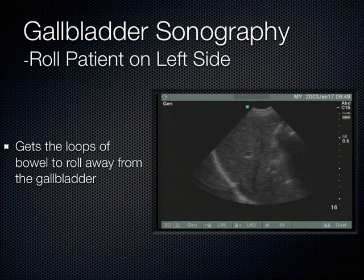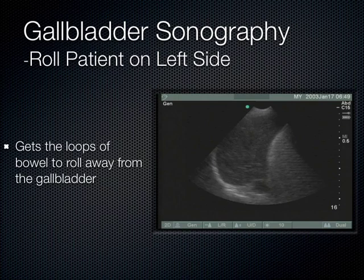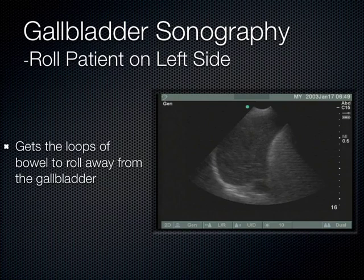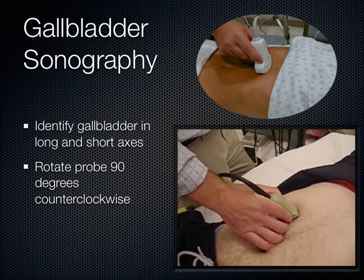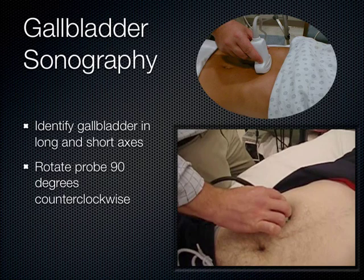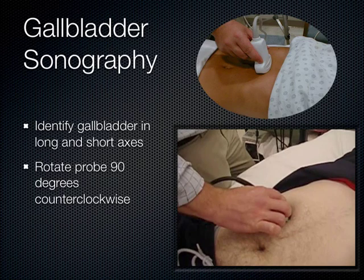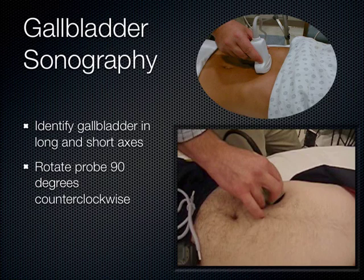What you're going to hear next is from a prior ultrasound fellow of mine named Will Scruggs, who has made it his life's work with ultrasound and the gallbladder. Once you locate the gallbladder in the long axis, you need to view it in the short axis. Fan through the gallbladder in the long axis, making sure you catch the entire gallbladder looking for any pathology. Then rotate the probe 90 degrees and view the gallbladder in the short axis, fanning through the entirety of the gallbladder looking for possible pathology.